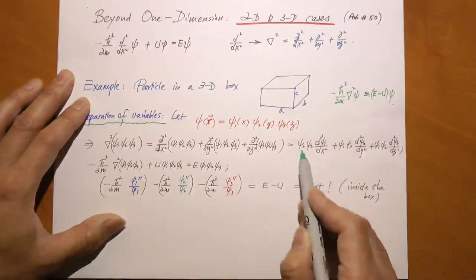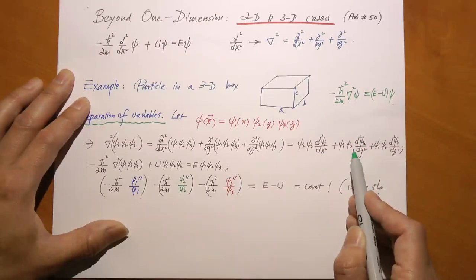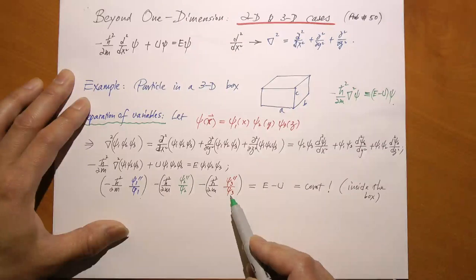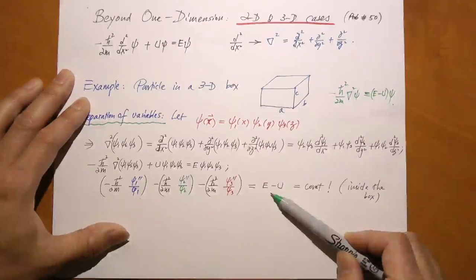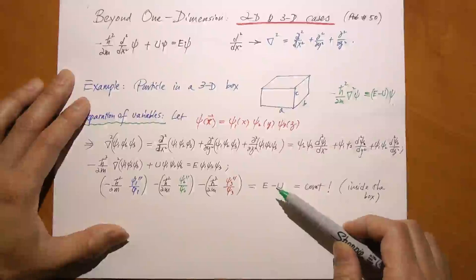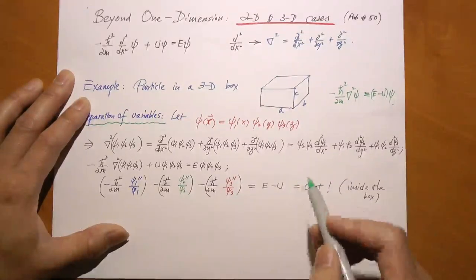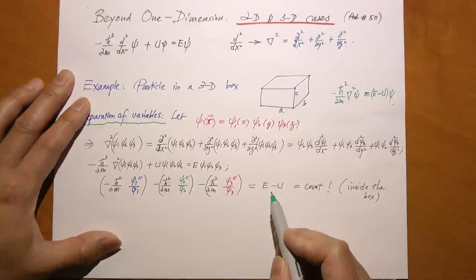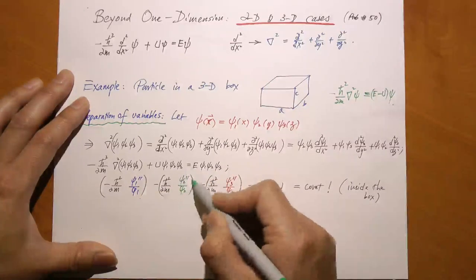So I have broken the kinetic energy part into three terms. The other side was E minus U times psi, and now psi is divided off, so it's just E minus U. What is U equal to? U is equal to infinity outside, but that is where psi equals zero. I only care about what happens inside - inside U is zero. So it's just the total energy E, which is a constant. This constant is equal to the sum of these three terms: a function of x only, a function of y only, and a function of z only.